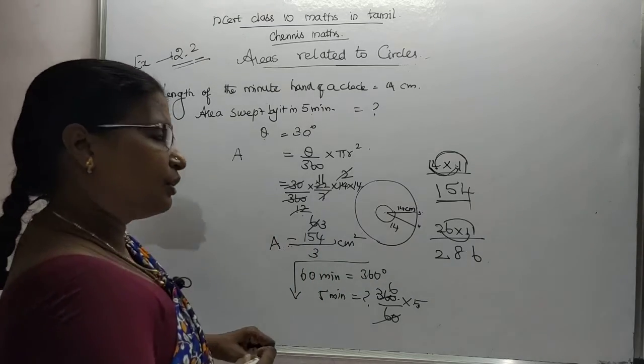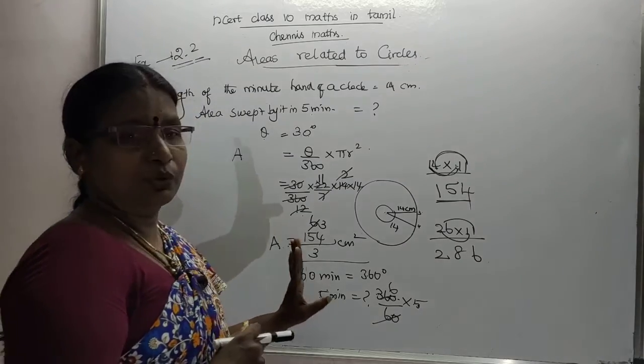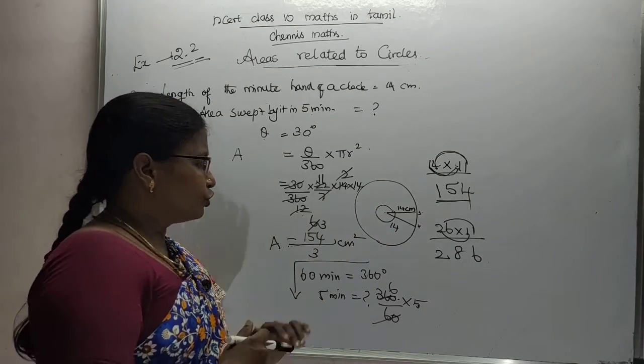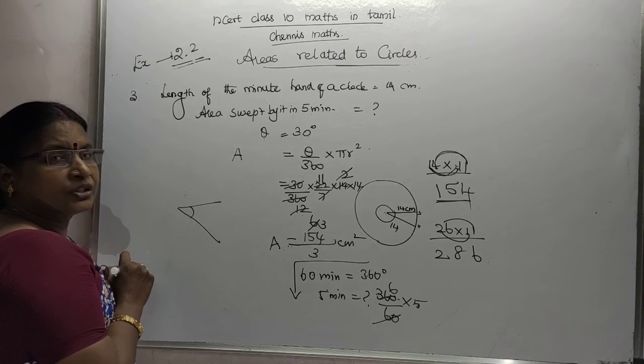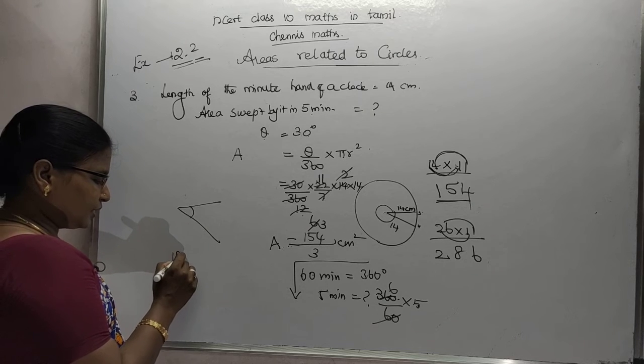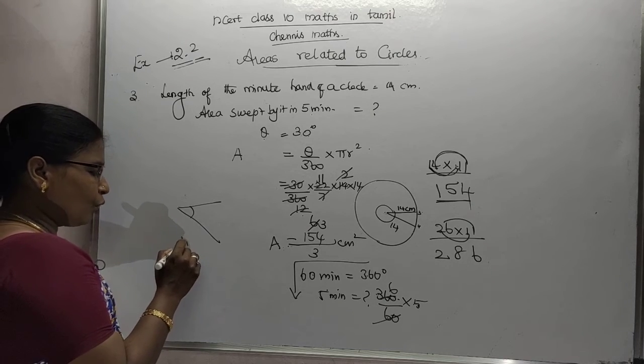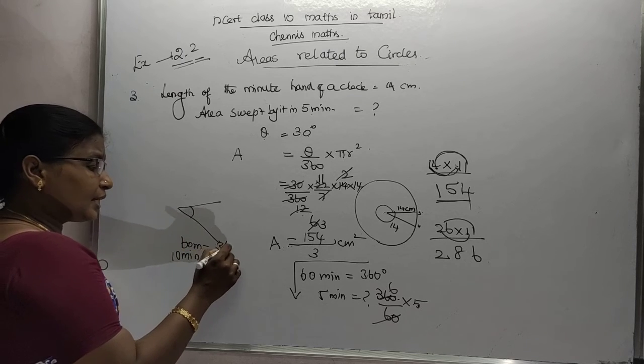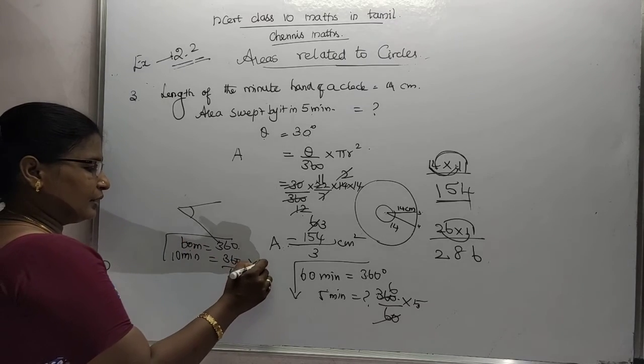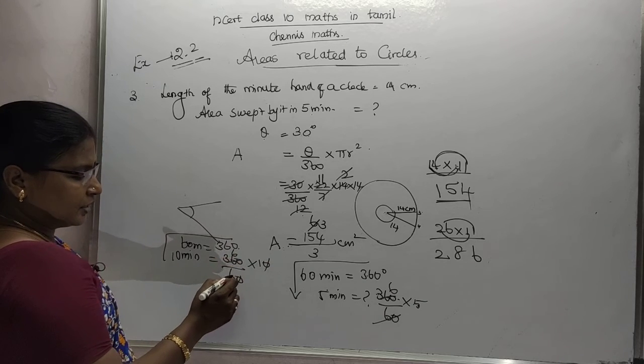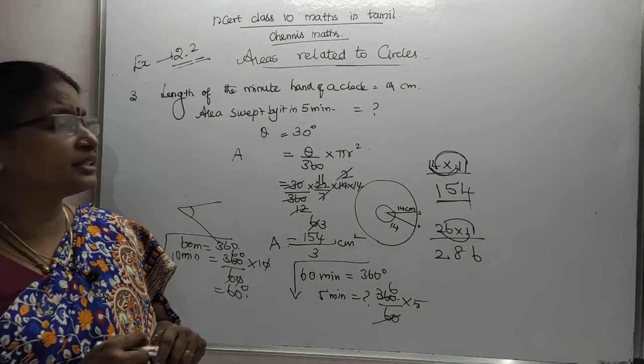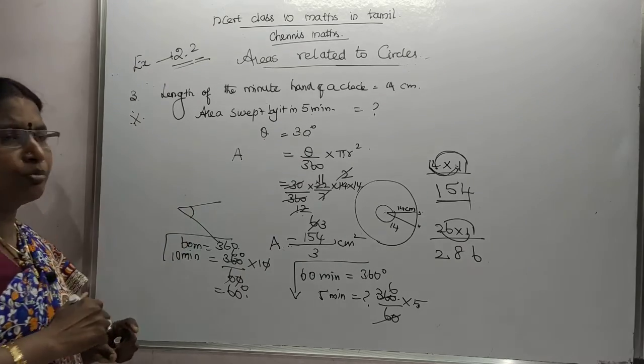Actually it is degree. You can leave the fraction as it is, cm². Then you can finish it. For 10 minutes, in total 60 minutes equals 360 degrees, then 10 minutes 60 degrees move out. This is the most important question, please do mark this. Understood.